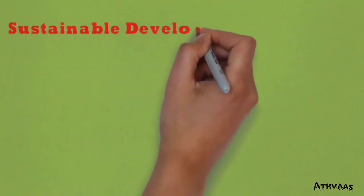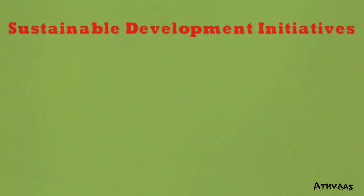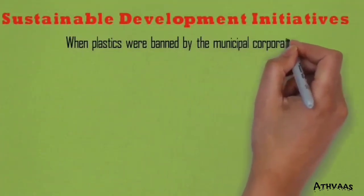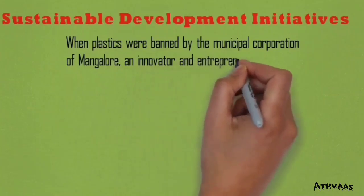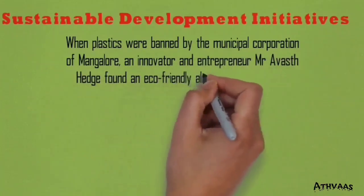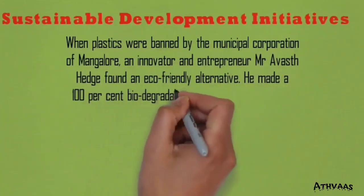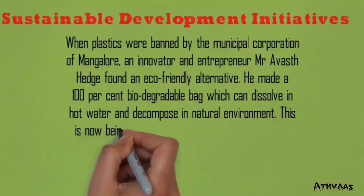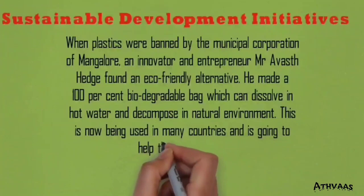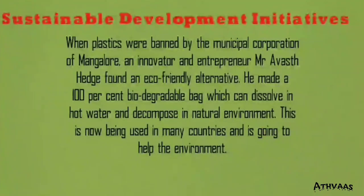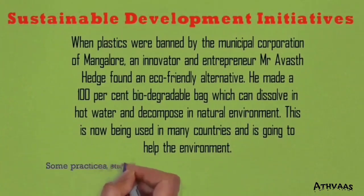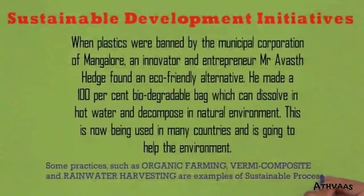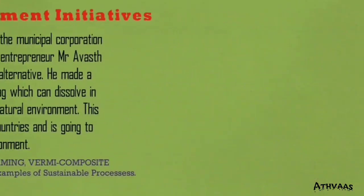Now let's see an example of a sustainable development initiative taken by Mr. Awasthi Hedge, who is an innovator and entrepreneur working for the environment. He made 100% biodegradable bags which can be dissolved in hot water and decomposed in the natural environment, as plastic bags were banned by the government at that time. Some practices like organic farming, vermicomposting, and rainwater harvesting are also examples of sustainable processes.